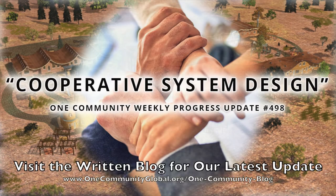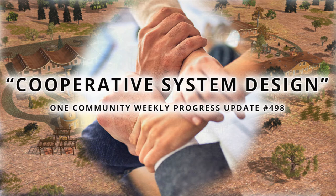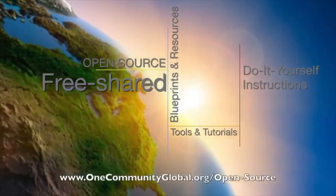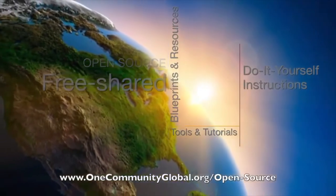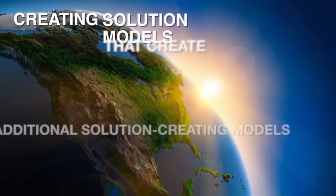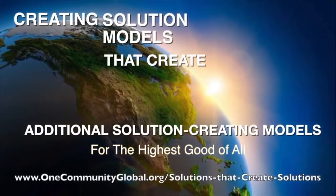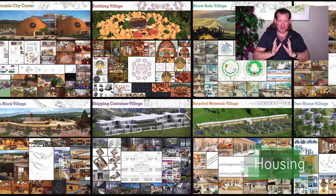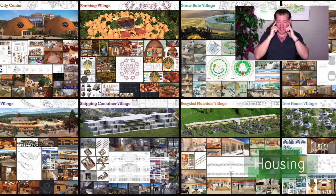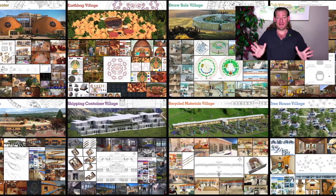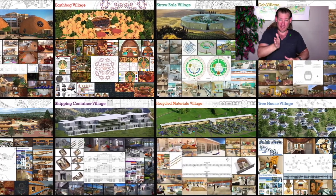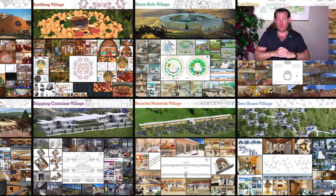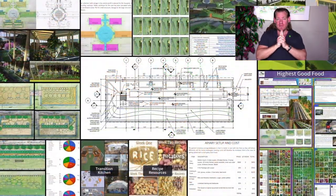Cooperative Systems Design — One Community Weekly Progress Update number 498. One Community is a 501c3 nonprofit organization creating open source and free shared blueprints, resources, tools, tutorials, and do-it-yourself instructions for highest good living — creating solution models that create additional solution-creating models in the service of all life on this planet. My name is Jay Sable and I'm the Executive Director of the One Community 501c3 nonprofit. This is our October 9th, 2022 edition of our Weekly Progress Update and today's topic is Cooperative Systems Design.